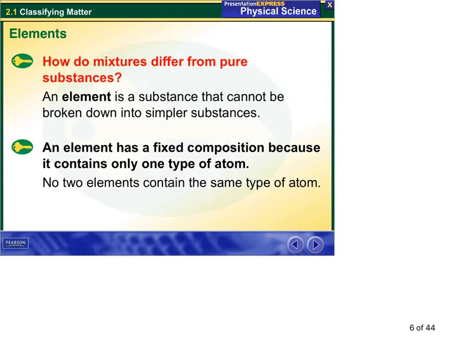Another key question is how do mixtures differ from pure substances. An element is a pure substance that cannot be broken down into simpler substances. Element has a fixed composition because it's made of one type of atom.